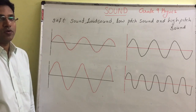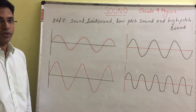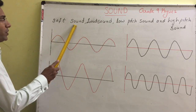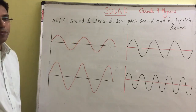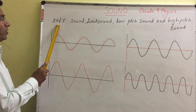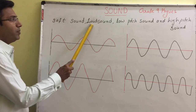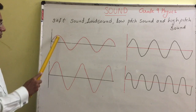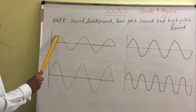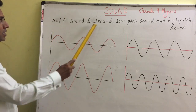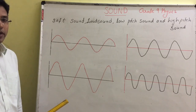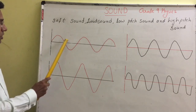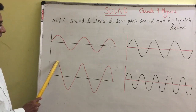Now let us learn how to identify soft sound, loud sound, low pitch sound, and high pitch sound from wave diagrams. Soft or loud sound depends upon amplitude. If amplitude is low, the sound will be soft; if amplitude is high, the sound will be loud. Comparing these two waves: this wave has low amplitude (soft sound) and this wave has high amplitude (loud sound). Higher amplitude means higher loudness, so amplitude and loudness are directly related.